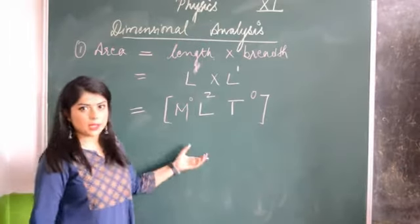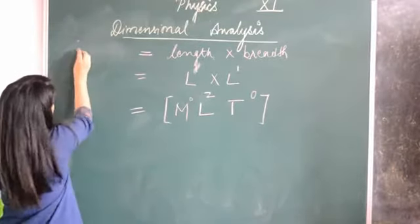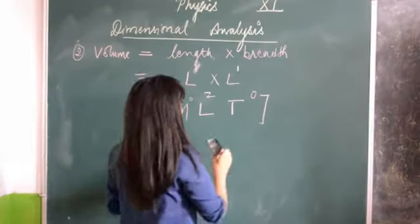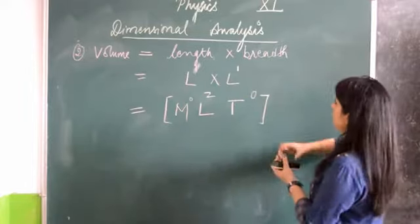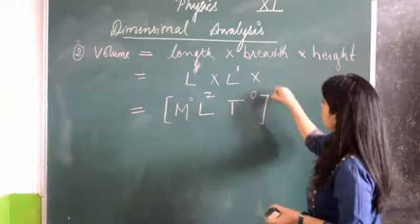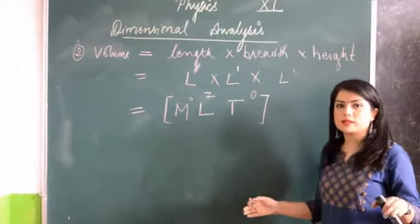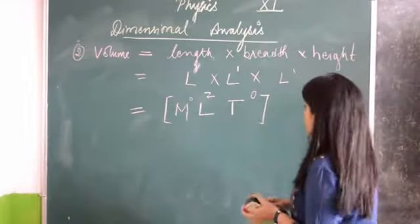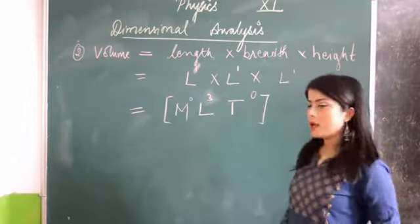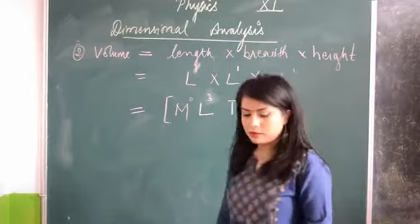Similarly, we can do the same for volume. Volume is length into breadth into height. Length is L, breadth is L, and height will also be L because height is also measured in terms of length. So there are three L's, meaning the power of L will be 3. M and T remain the same — M to the power 0 and T to the power 0. This is the dimensional formula for volume.